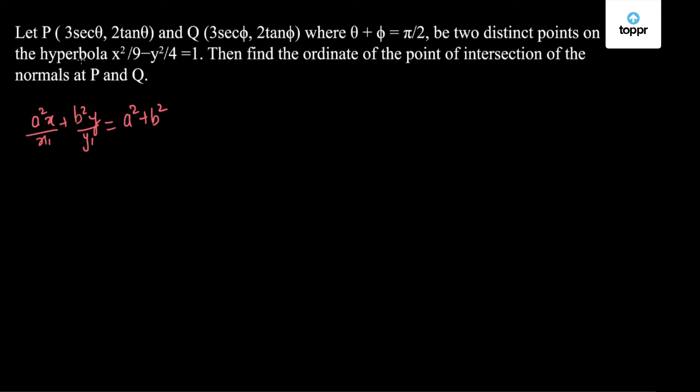So normal at point P will be of the form 9x/(3secθ) + 4y/(2tanθ) = 13. So I have 3cosθ x + 2cotθ y = 13. So this becomes my equation 1.